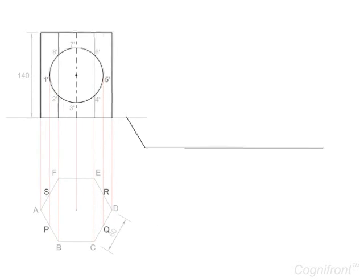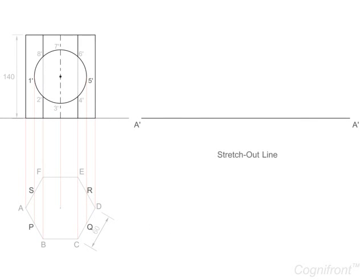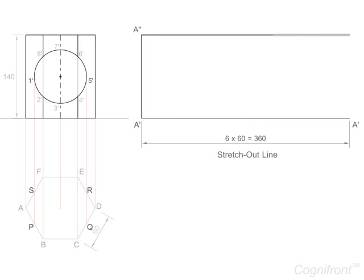Next, draw stretch out line a-a-dash. A perpendicular line a-dash a double dash is drawn. From point a double dash a parallel line of length equal to line a-dash a dash is drawn and then the rectangle is completed.